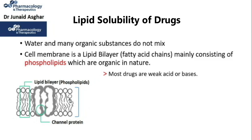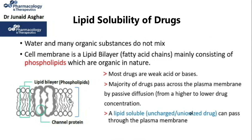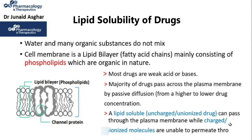It is known that most drugs are either weak acids or weak bases. The majority of drugs pass across the plasma membrane by passive diffusion from a region of higher to lower drug concentration. A lipid-soluble, uncharged, or unionized drug can pass through the plasma membrane, while charged or ionized molecules are unable to permeate through.